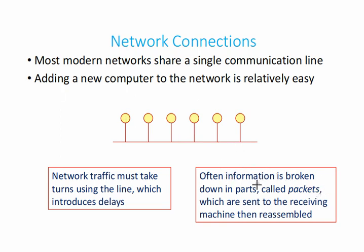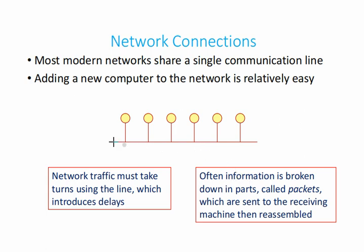Often, information is broken down into parts called packets, which are sent to the receiving machine and then reassembled. When sending information, it is not sent as a complete unit — it is broken into packets, transmitted, and then recombined at the destination computer.